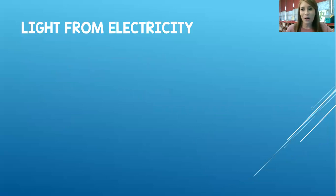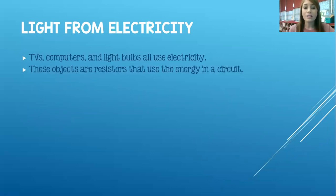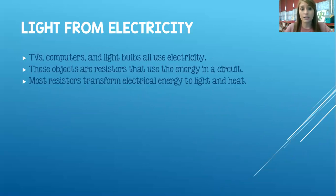All right. Light from electricity. TVs, computers, light bulbs, all of that use electricity. I'm using electricity right now on my laptop with the lights on in my room. All of it electricity. These objects are resistors, which remember we talked about resistors last week. Resistors are just anything that transforms energy and uses it as something else. So these objects are acting as the resistors in a circuit. Most resistors transform electrical energy to light and heat. Most do. Not all. Most.